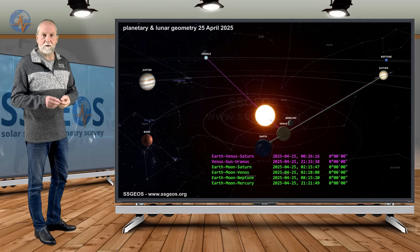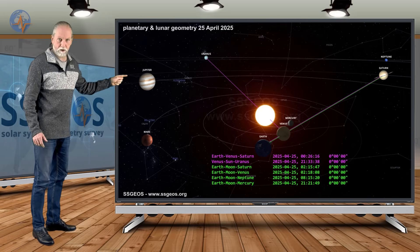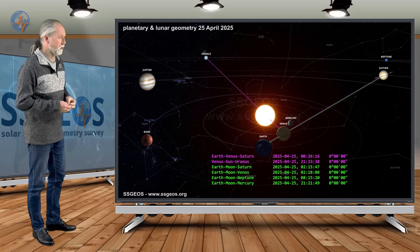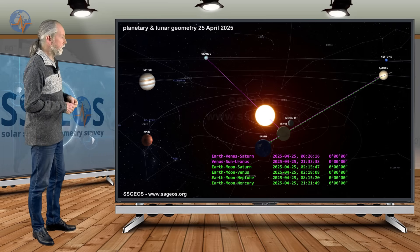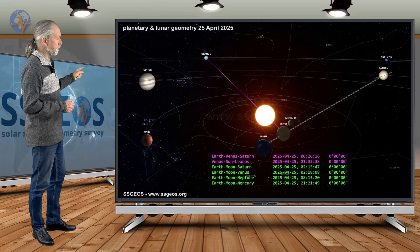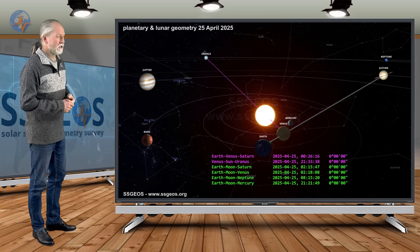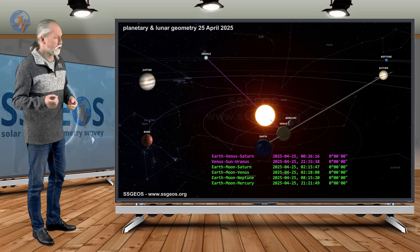That means that we have effectively a quadruple conjunction: Earth, Moon, Venus, and Saturn. That can result in stronger seismic activity. I'll come to that in a minute. We also have Venus, Sun, and Uranus in a conjunction, also that's later today, and that is a more critical factor to this geometry overall.